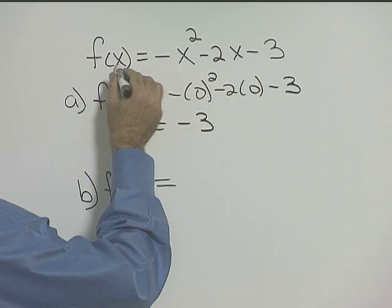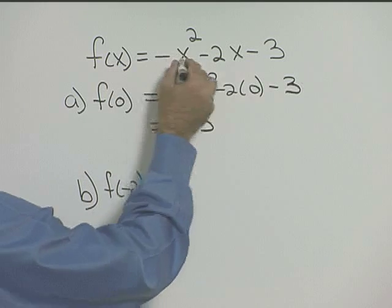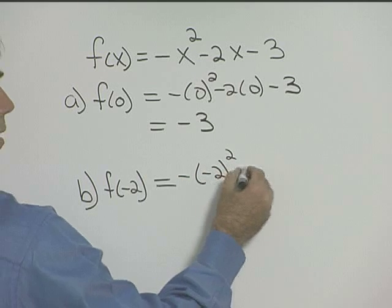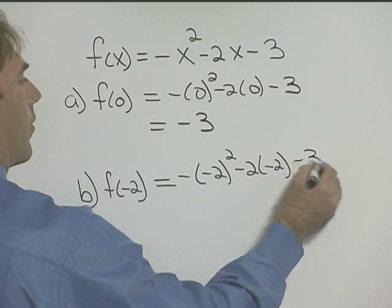Let's now find f of negative 2. Well this time in place of x we're going to put negative 2. So it'll be minus negative 2 squared minus 2 times negative 2 minus 3.